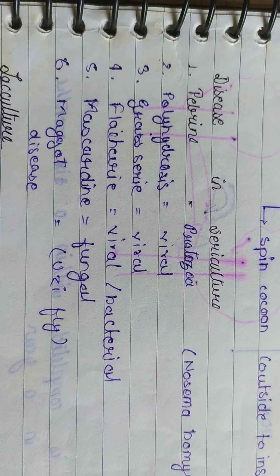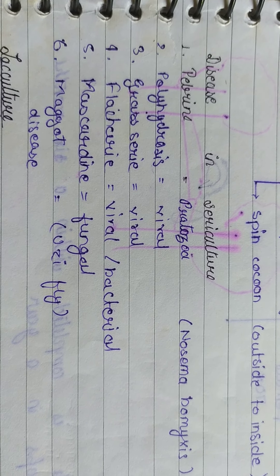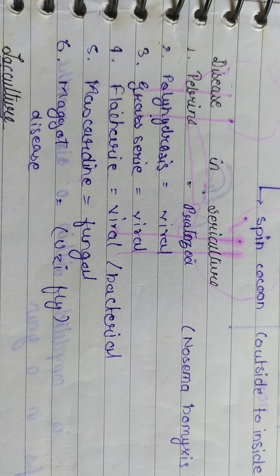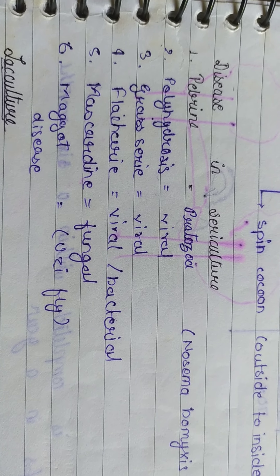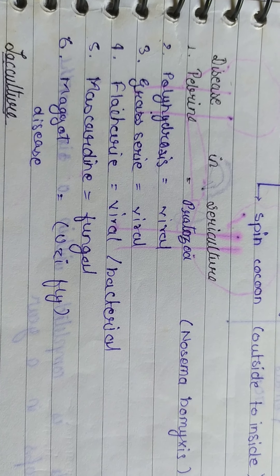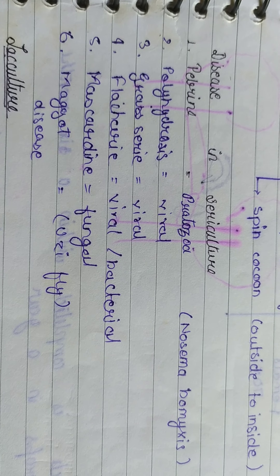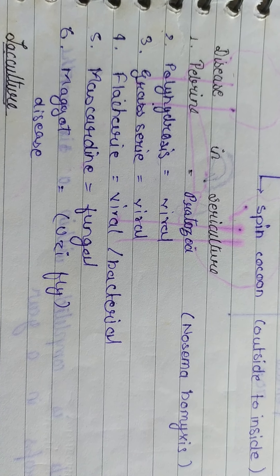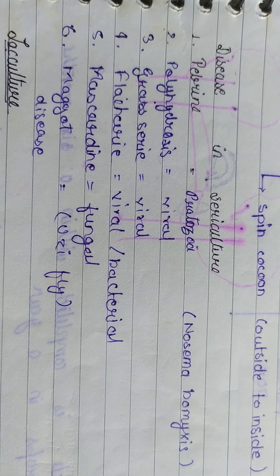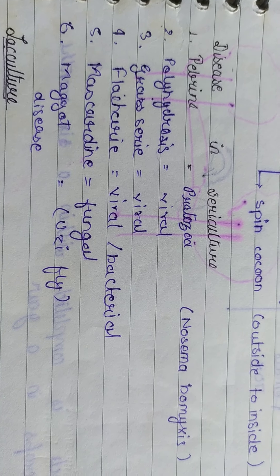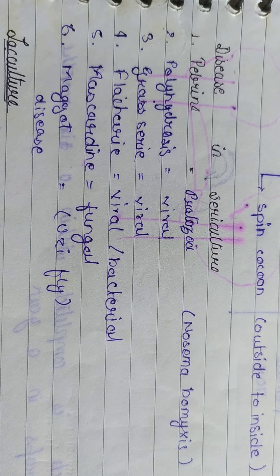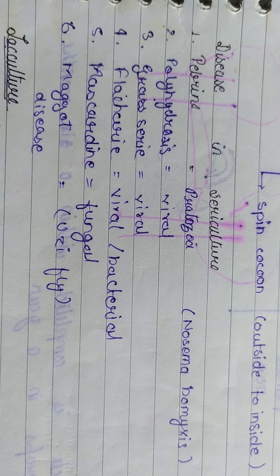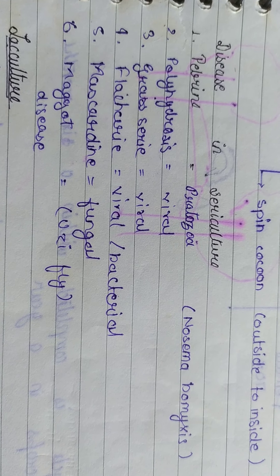Diseases in sericulture include Pebrine caused by protozoan Nosema bombycis, Flacherie, Grasserie, and Polyhedrosis. Bacterial diseases include Flacherie and Muscaridine. Fungal diseases include Muscardine. Uzi fly infestation is also a major pest of silkworm.